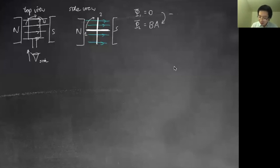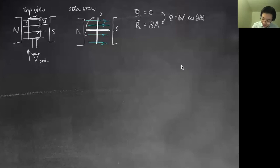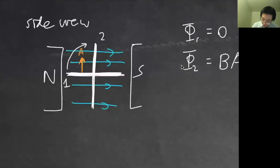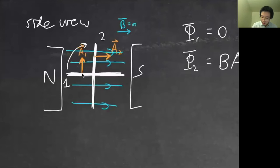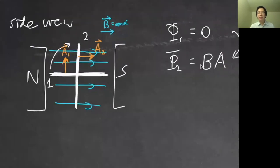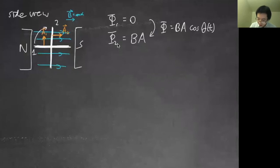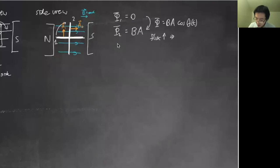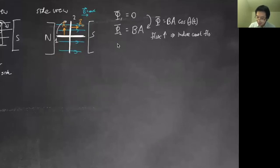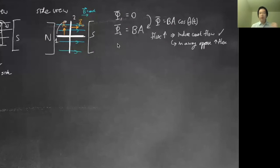Technically the flux is BA cos θ. B is not changing, A is not changing — it's the angle θ between them that's changing. So in state one the area vector is perpendicular to B, giving cos θ = 0. In state two after rotating 90°, cos θ = 1 and flux is maximum. So in this process the flux increases, which means there will be an induced current. That current flows in a way that opposes the increasing flux — trying to decrease it.